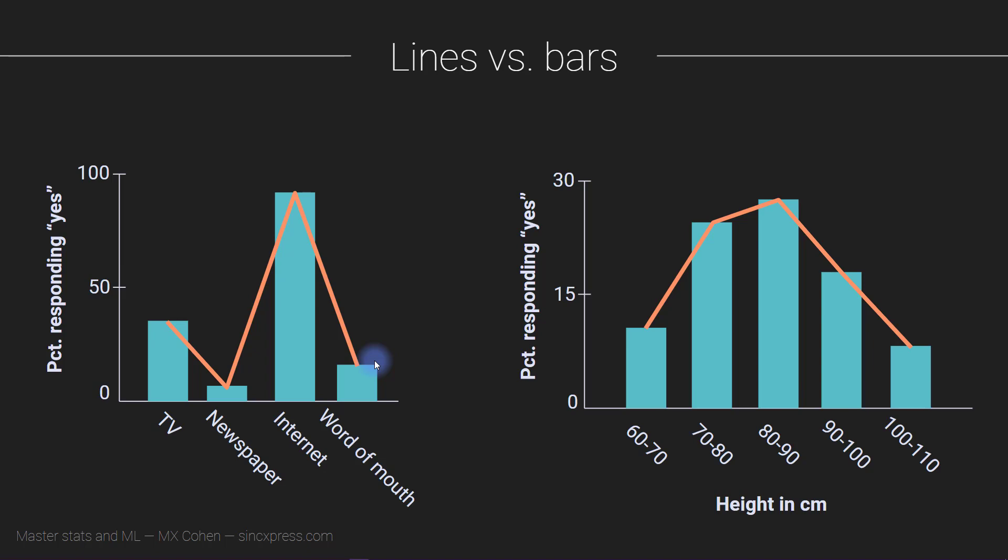Now the thing is you're not really supposed to use lines instead of bars. The reason is that when you draw lines instead of bars what you're actually displaying is that there is an intermediate value between these two. Showing a line here actually means that you think that the item between newspaper and internet has a value of 50 percent. Now that doesn't even make sense. What is in between a newspaper and an internet, and what if we'd swap these? It doesn't even make sense.